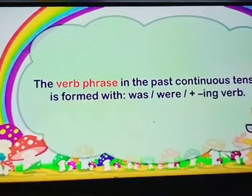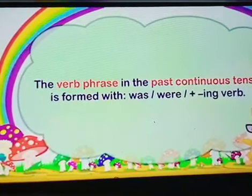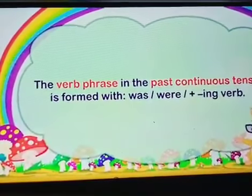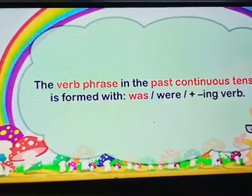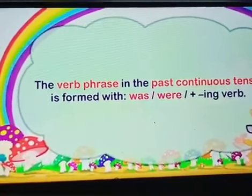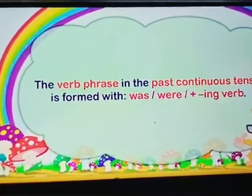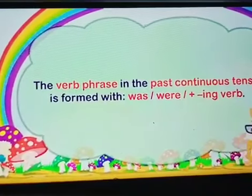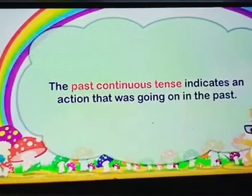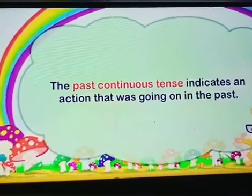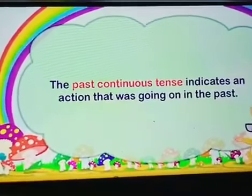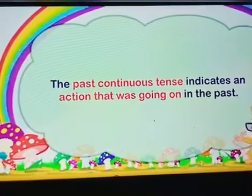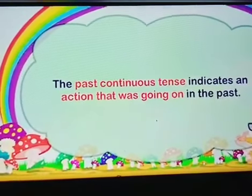The verb phrase in the past continuous tense is formed with was or were plus the ing verb. The past continuous tense indicates an action that was going on in the past.